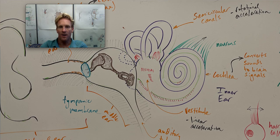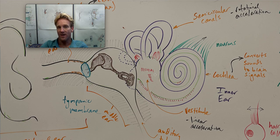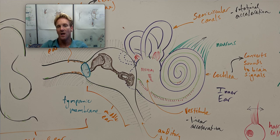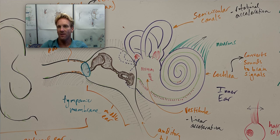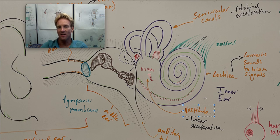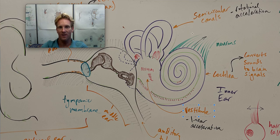Moving on, here we have the inner ear. This is a series of structures that are filled with fluid. Collectively, we have the vestibule right here. The semicircular canals are these tube-like structures — there are three sets of these semicircular tubes. And then finally we have the cochlea. The cochlea allows us to convert sounds into brain signals or action potentials. The overall job of the vestibule is to detect linear acceleration, both vertically and horizontally. And the job of the semicircular canals is to detect rotational acceleration.